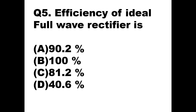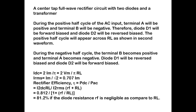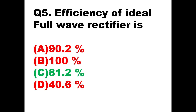Question number five: the efficiency of an ideal full wave rectifier is how much? We have proved in our theory that the efficiency is 81.2%, so option C is the right answer. IDC = 2·Im/π = 2·Vm/(π·RL) and IRMS = Im/√2 = 0.707·Im. Taking rectifier efficiency as DC power upon AC power and substituting these values, you get 81.2% when diode resistance is negligible compared to load resistance.